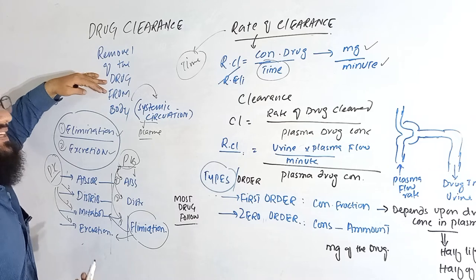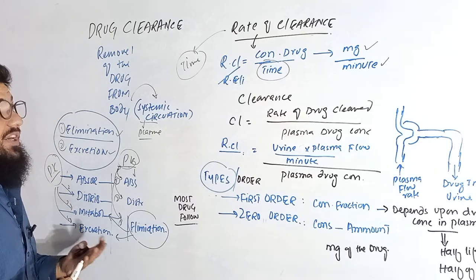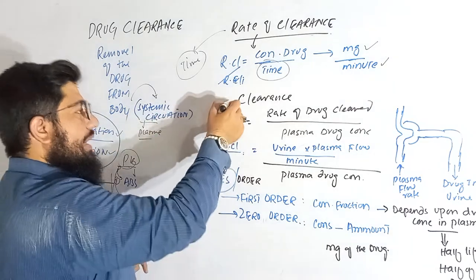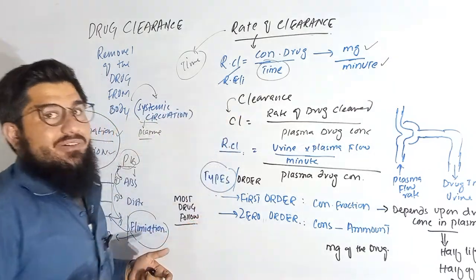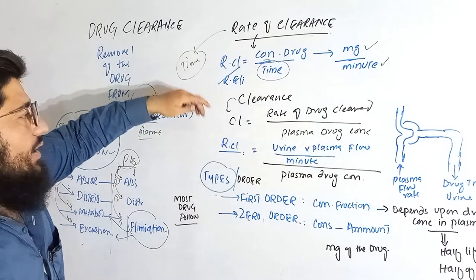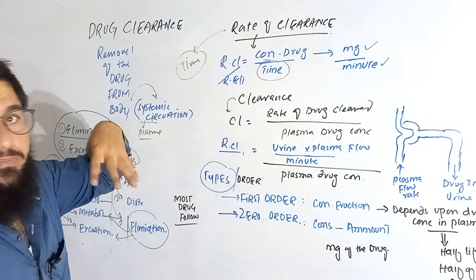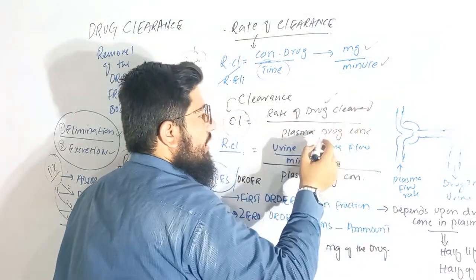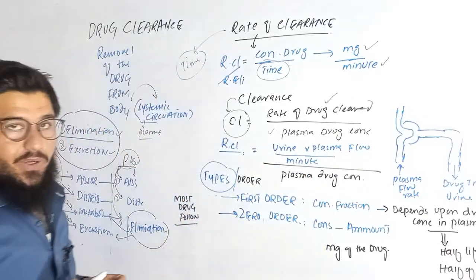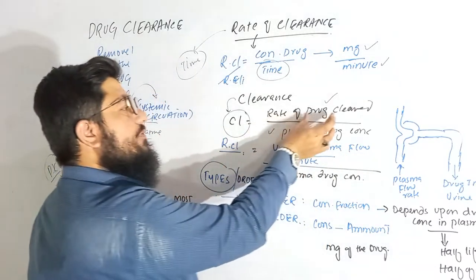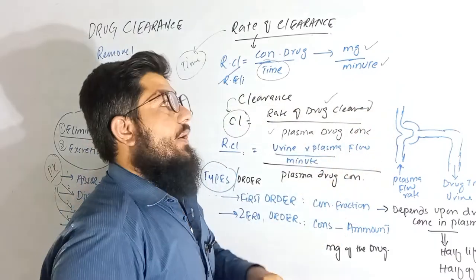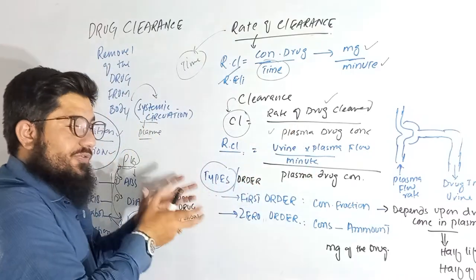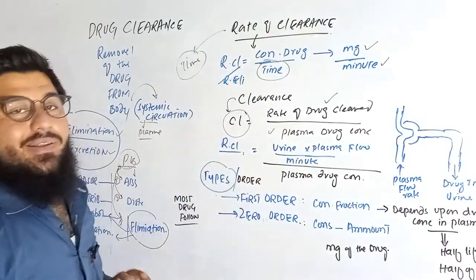For simple clearance, you are not bound to write minutes. But for rate of clearance, you must mention the time unit. A pharmacological way of understanding clearance: clearance equals the rate of drug cleared from the body divided by the plasma drug concentration. If you know the rate and divide by plasma drug concentration, you get the clearance.